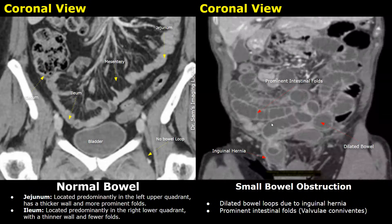In this case an inguinal hernia is present which led to small bowel obstruction. You can see protrusion of small bowel in the inguinal canal — the hernia sac contains small bowel which led to small bowel obstruction. The bowel loops are dilated with prominent intestinal folds.